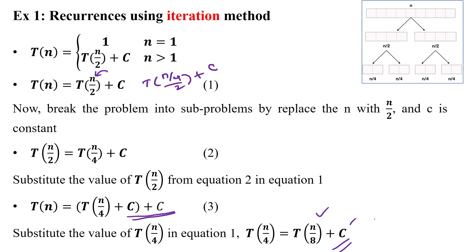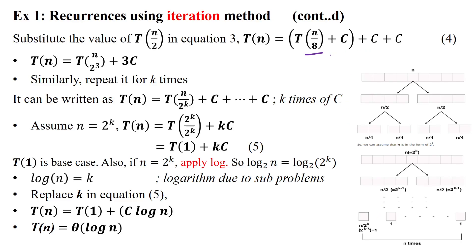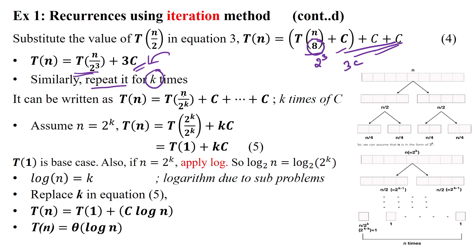So now T(n) = T(n/8) + 3c. We can observe a pattern here — 8 is 2 to the power 3, and we are having 3c. When repeating this k times to reach the initial condition, we can write T(n) = T(n / 2^k) + kc. The denominator becomes 2 to the power k, and we accumulate k number of constants.